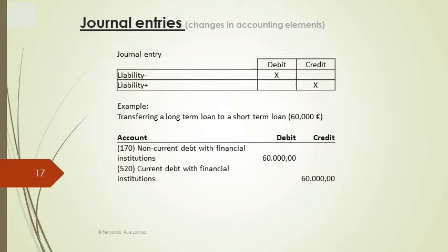The next example shows another decrease in liabilities, but in this case the counterpart is an increase in another liability. This happens, for instance, when it is less than 12 months for a long-term debt to be due. In this case, we must substitute a short-term or current liability for the original long-term debt. As a consequence, we no longer recognize a long-term debt — we debit it — but in exchange, we recognize a short-term debt in the account current debt with financial institutions for €60,000.